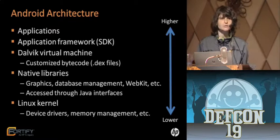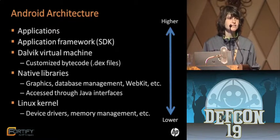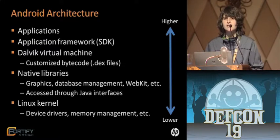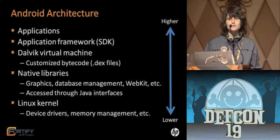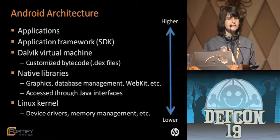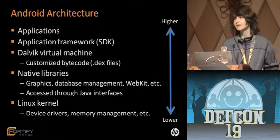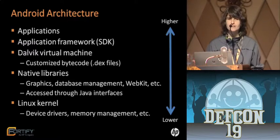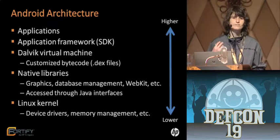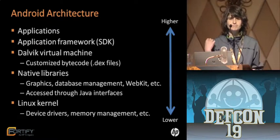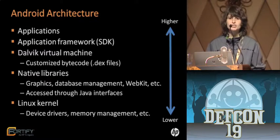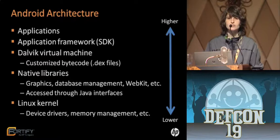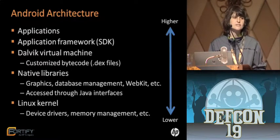Android is built on top of the Linux kernel and provides things like graphics, database management, and the browser engine WebKit. These can be accessed via Java interfaces. On top of the native libraries there's a modified virtual machine called the Dalvik virtual machine, which runs .dex rather than .class files. Android applications are written in Java using the Google Android SDK, which is a Java interface that allows you to access systems and services of the Android platform.